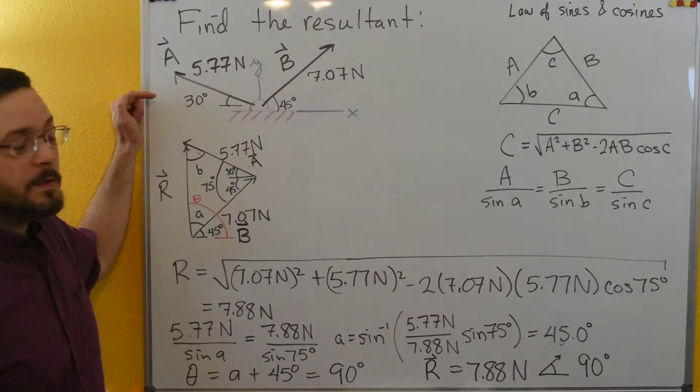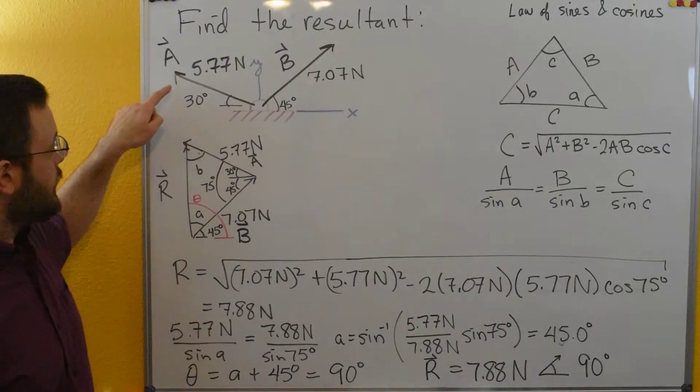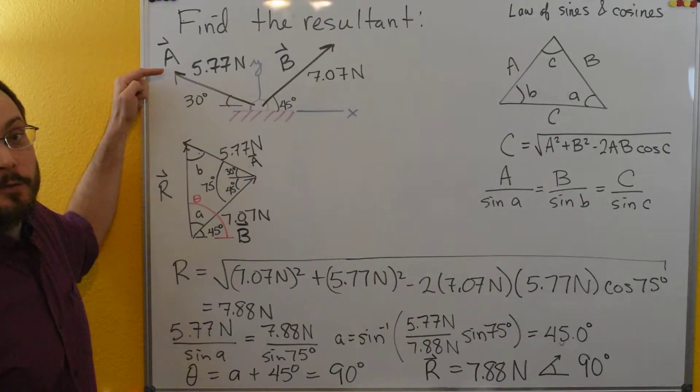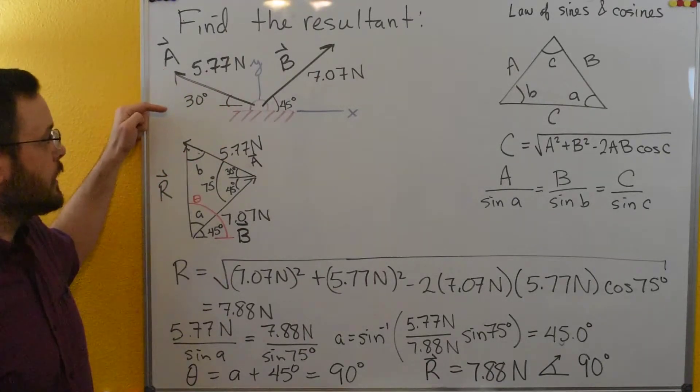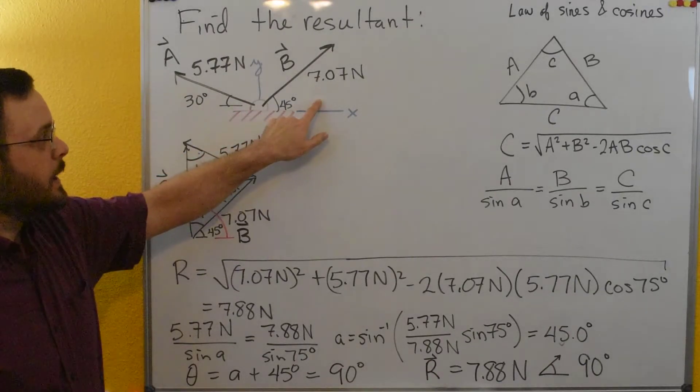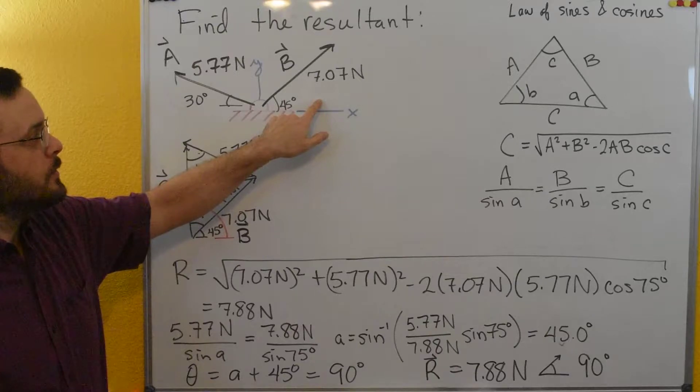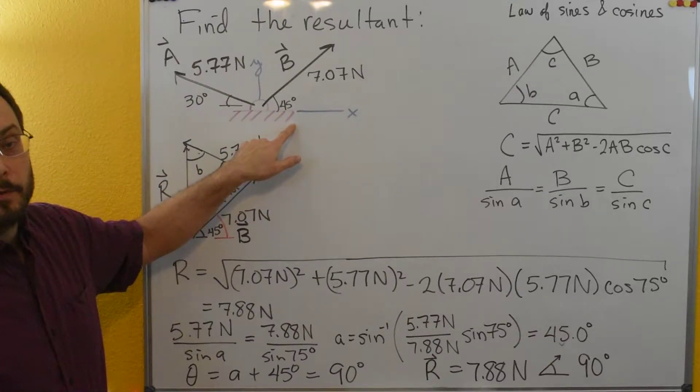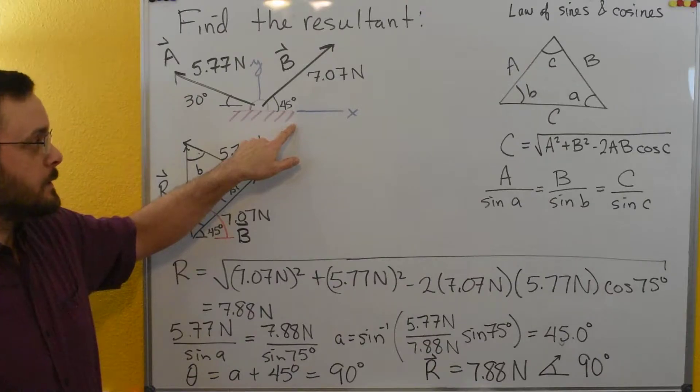So in this case we have these two vectors. A has a magnitude of 5.77 newtons at an angle of 30 degrees to the negative x-axis. B has a magnitude of 7.07 newtons at an angle of 45 degrees to the positive x-axis.